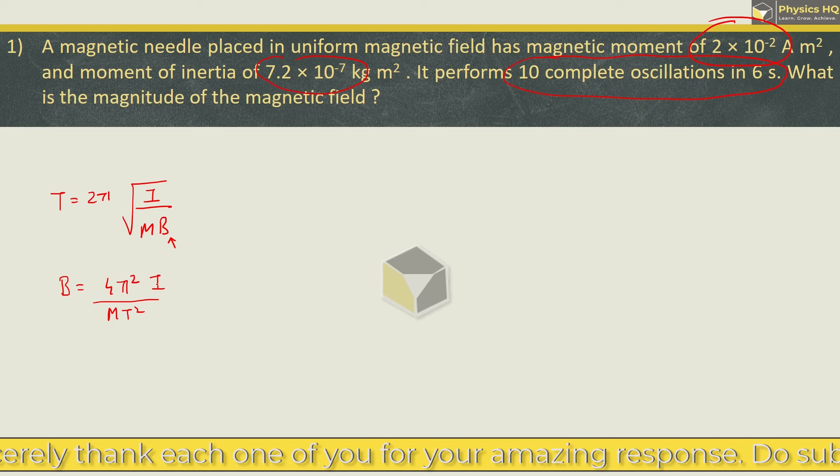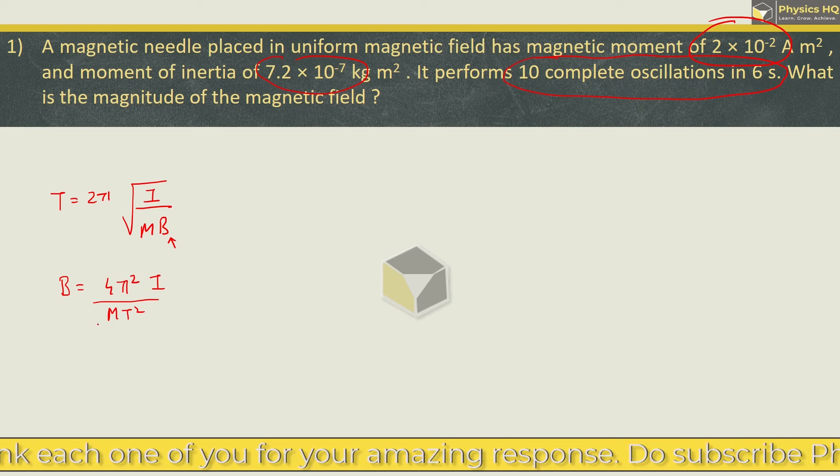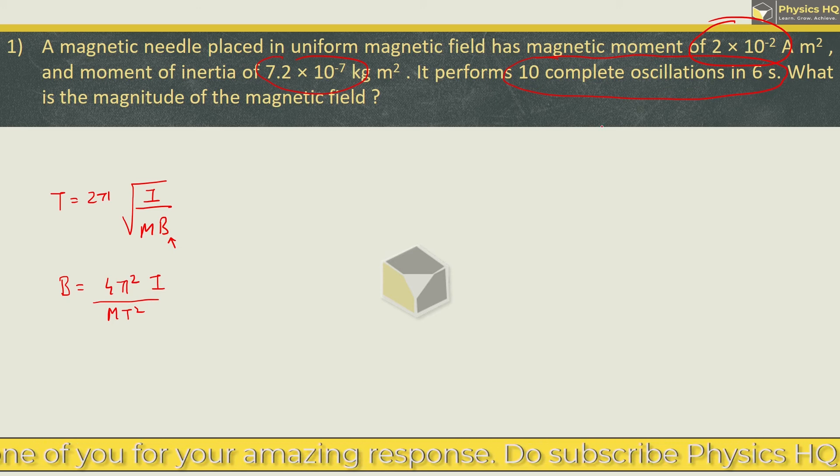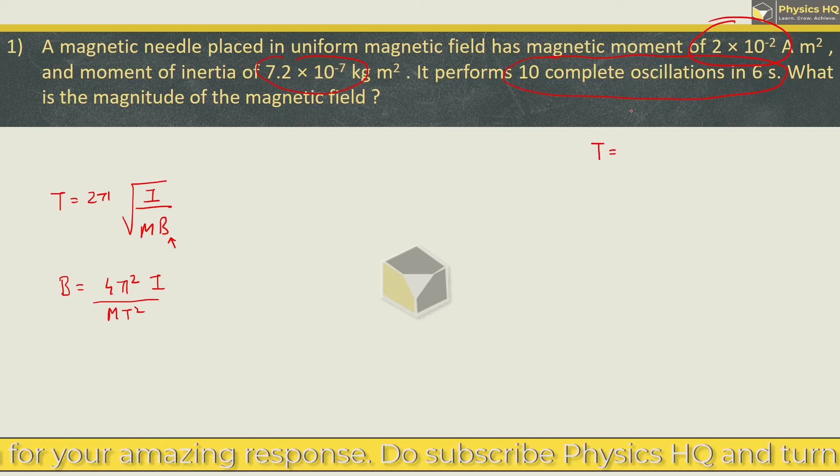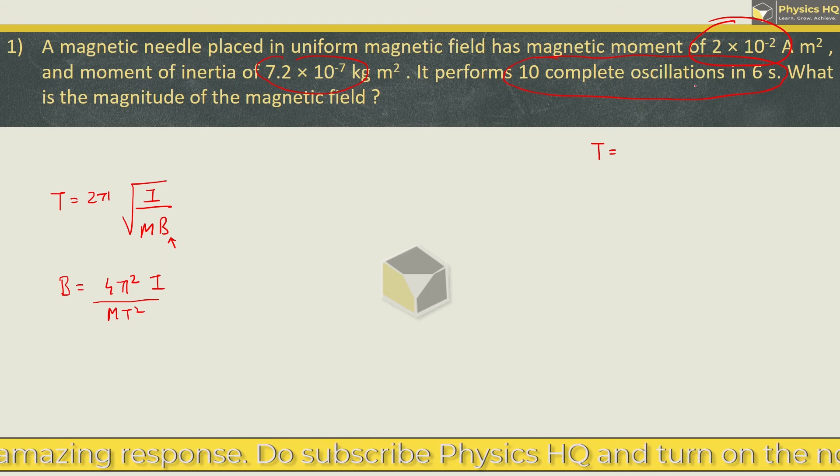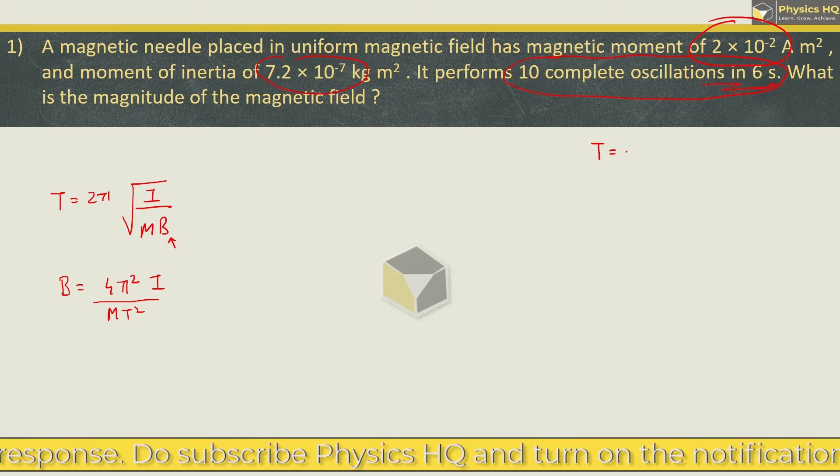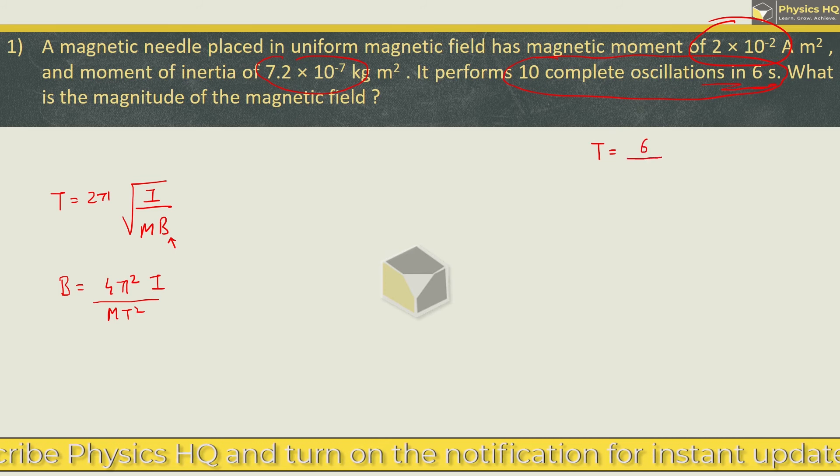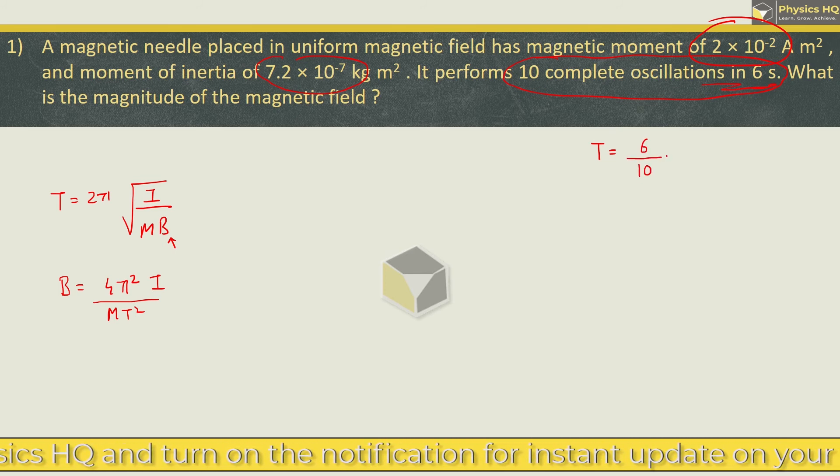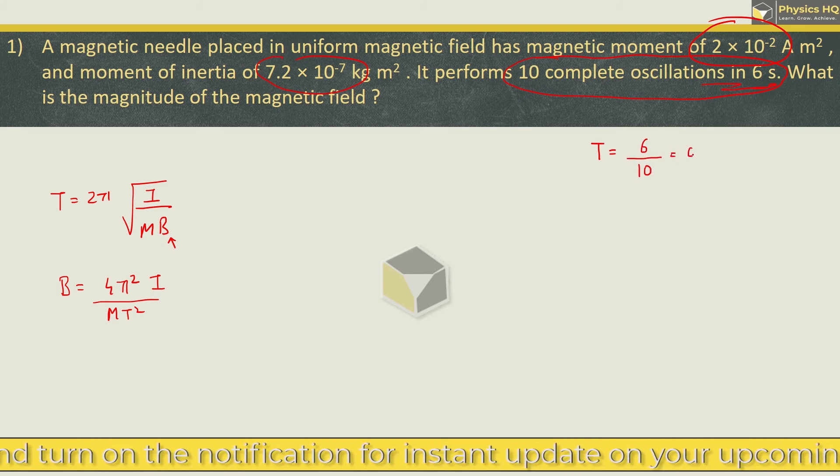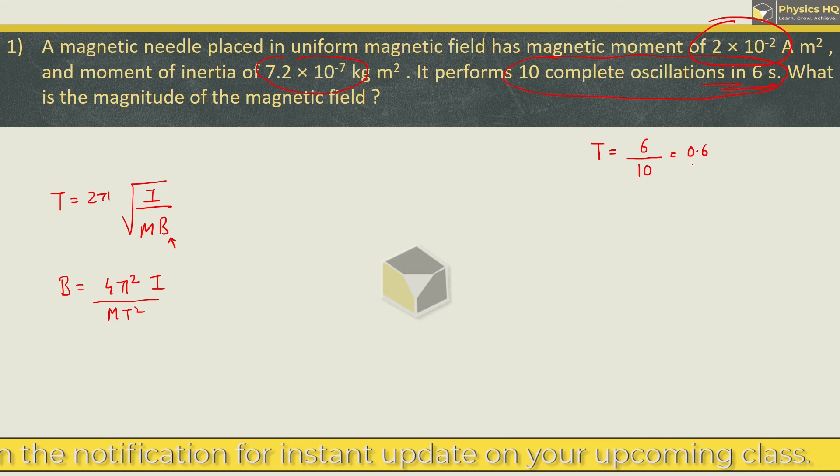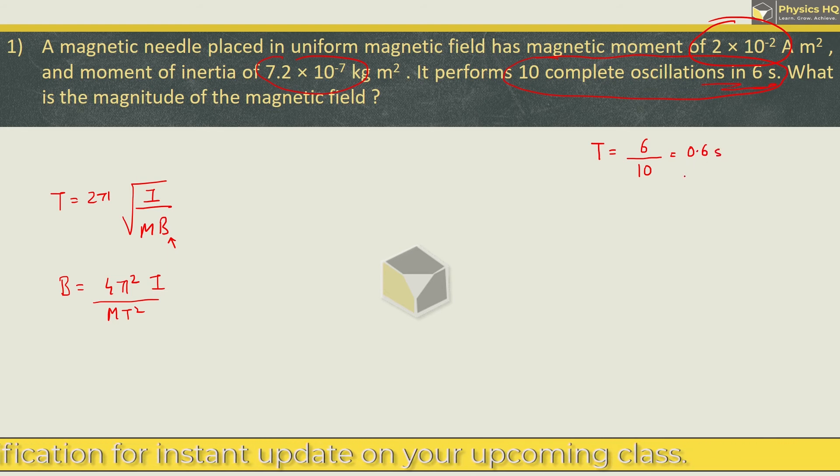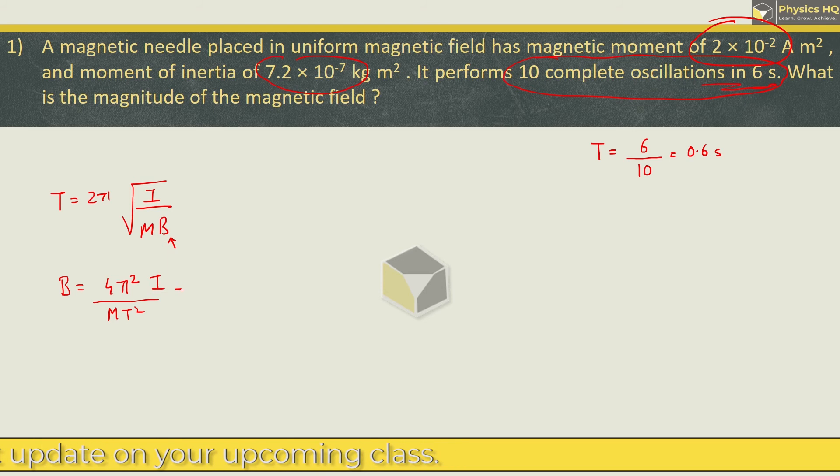The moment of inertia is given, the magnetic moment is given. Time period is what? It completes 10 oscillations in 6 seconds. So, the total time taken divided by the total number of oscillations gives time to complete a single oscillation. Time period is 0.6.